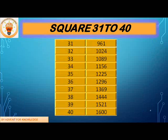Now let's do the squares from 31 to 40. 31 square is 961, 32 square is 1024, 33 square is 1089, 34 square is 1156, 35 square is 1225, 36 square is 1296.